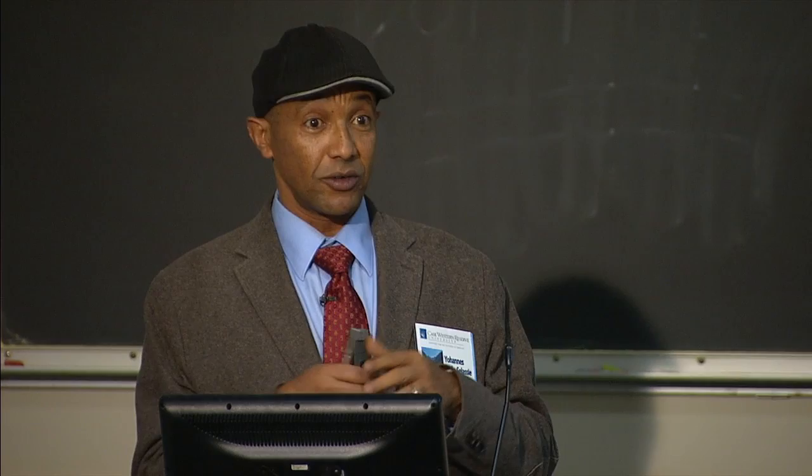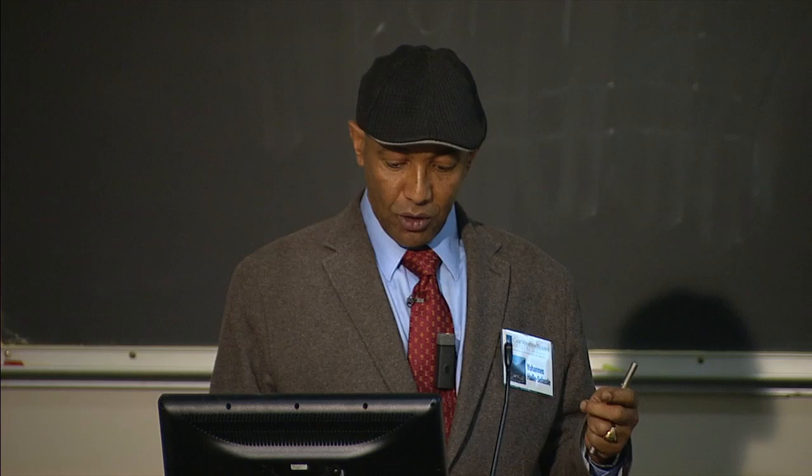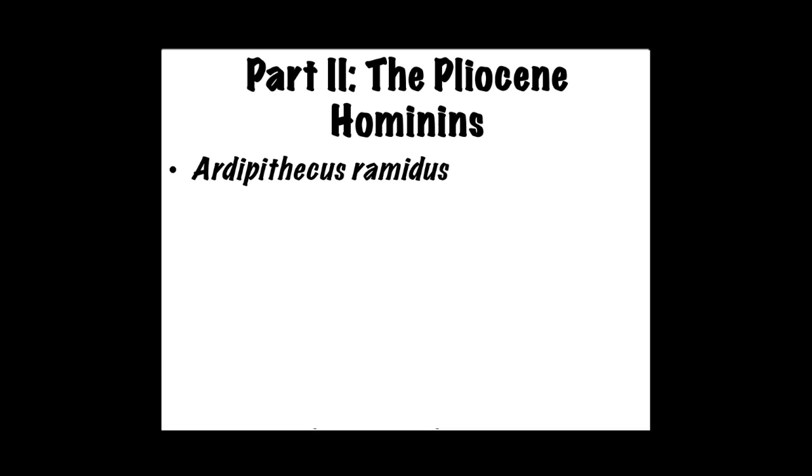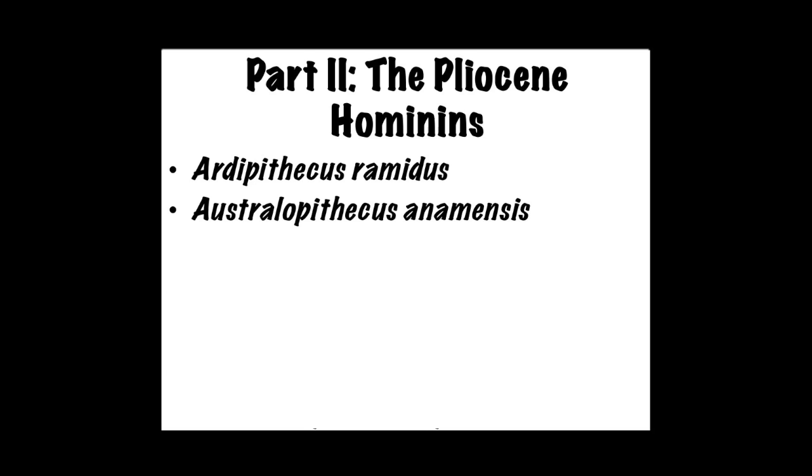Part two: the Pliocene hominins. I'm going to introduce the seven or eight hominin taxa we have during the Pliocene. I'm going to start with Ardipithecus ramidus, about 4.4 million years old — the oldest within the Pliocene. The next one is Australopithecus anamensis, and we know it's at least the ancestor of Australopithecus afarensis, Lucy's species. Australopithecus anamensis lived for about 300,000 years as far as the fossil record is concerned.